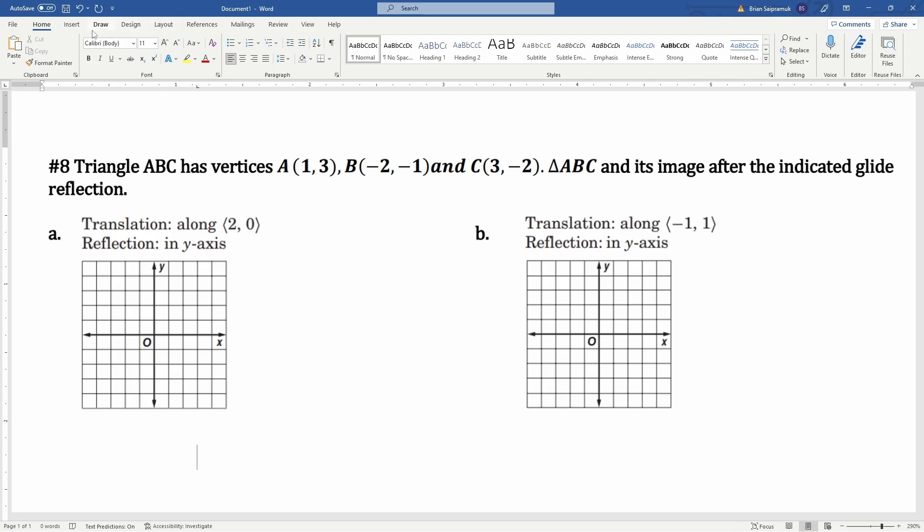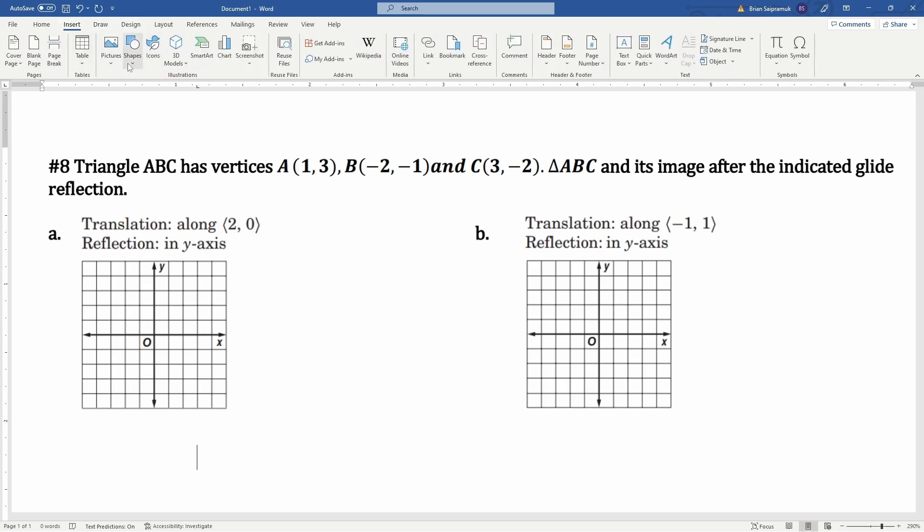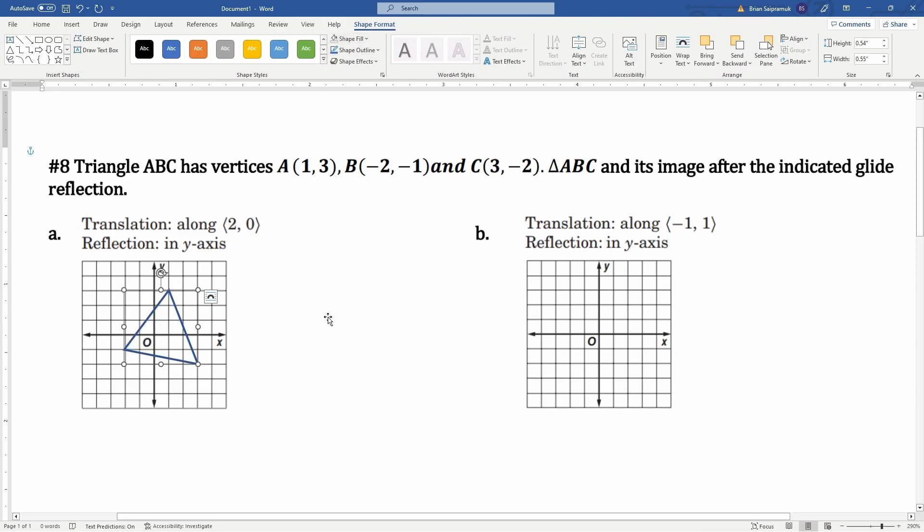I'm going to first use Word because I can graph very easily here. Point A is at (1, 3), which is right there. Then B is at (-2, -1), and C is at (3, -2), which is right here. I can now connect it. So this is the original triangle. I'm going to also grab that and put it right here as well because both part a and b have the same image.